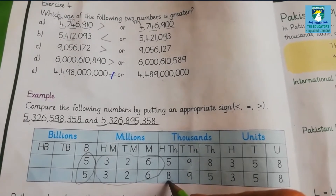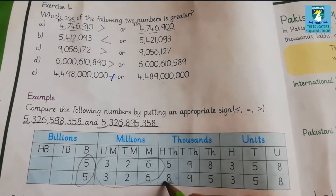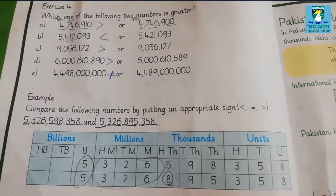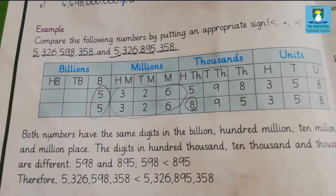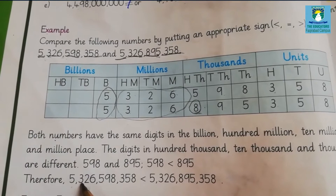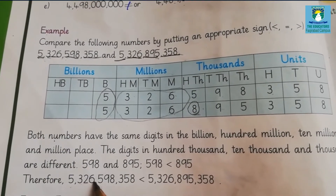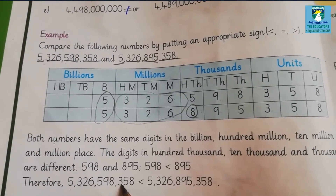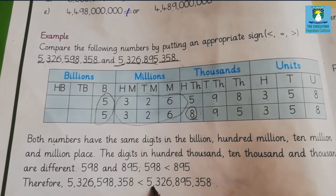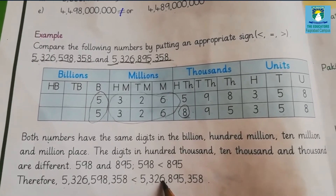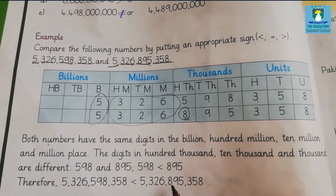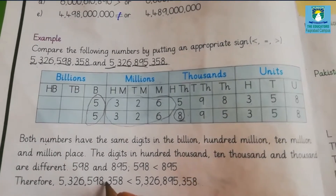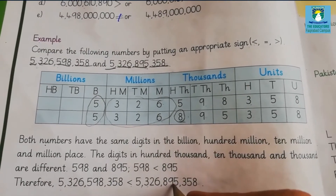The lower value has 598 thousands and the second value has 895 thousands, so the second value is greater than the first value. Therefore, 5,326,598,358 is less than 5,326,895,358. The first value is less than the second value.